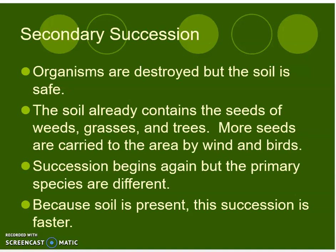The soil already contains the seeds of weeds, grasses, and trees. More seeds are carried to the area by wind and birds. Succession begins again but the primary species are different. Because soil is present, this succession is faster.